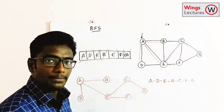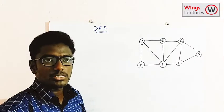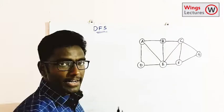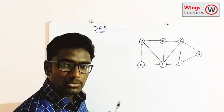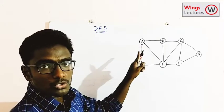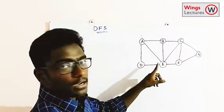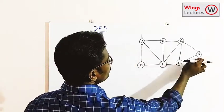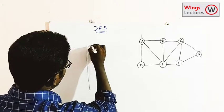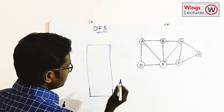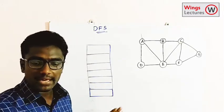Now we're going to see how Depth First Search works on the same graph. In DFS we use a stack data structure. First find the source vertex — I'm keeping A as the starting vertex. There are seven vertices, so create a stack of size seven.